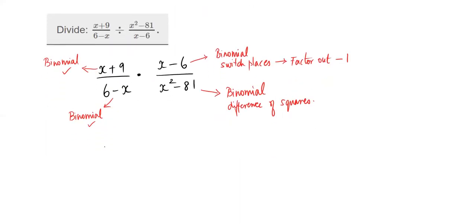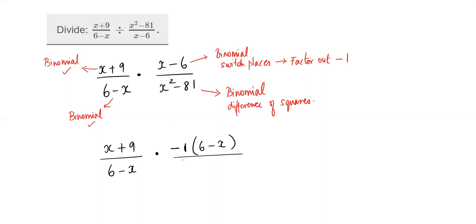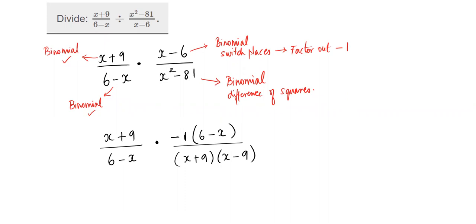Now executing the plan: for the (6−x) term, factor out negative one to get −1·(x−6). For x²−81, apply difference of squares: that's (x+9)(x−9). Since we already handled the division symbol at the start by flipping, we continue to simplify and cross-cancel.